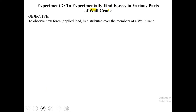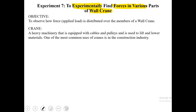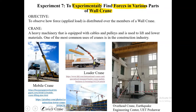Coming back to today's experiment — finding forces in various parts of a wall crane — we'll first understand the mechanism of the wall crane, then make use of the law of polygon of forces to find forces in its various parts, and compare the result from the graphical solution to the experimental readings. A crane is basically heavy machinery equipped with cables and pulleys, used to lift or load materials during construction. There are various different types of cranes.